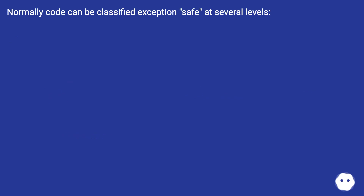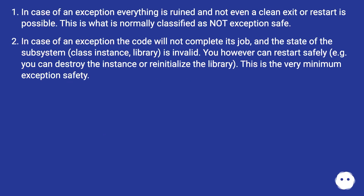Normally, code can be classified as exception-safe at several levels. In case of an exception, everything is ruined and not even a clean exit or restart is possible — this is classified as not exception safe. In case of an exception, the code will not complete its job and the state of the subsystem, class instance, or library is invalid; however, you can restart safely, e.g. you can destroy the instance or reinitialize the library. This is the very minimum exception safety.